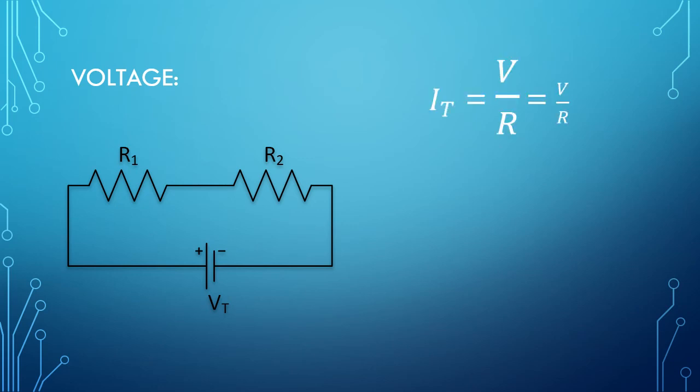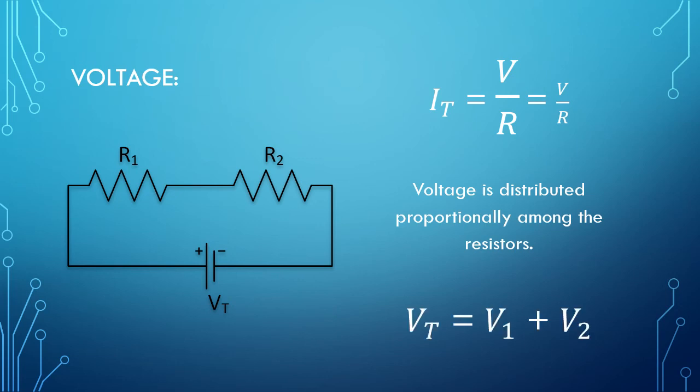So that higher resistance gets more, lower resistance gets less voltage. The sum of the two, however, has to be equal to the terminal or total voltage as one battery is supplying the voltage.